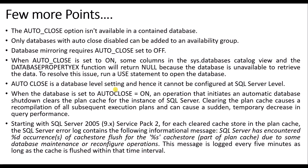This is a database-level setting and cannot be configured at the SQL Server instance level. When this option is on, an operation that initiates an automatic database shutdown clears the plan cache for the SQL Server instance. Clearing the plan cache causes recompilation of all subsequent execution plans and can cause a sudden temporary decrease in query performance. That is why it is not suggested to keep this option on in a production server.